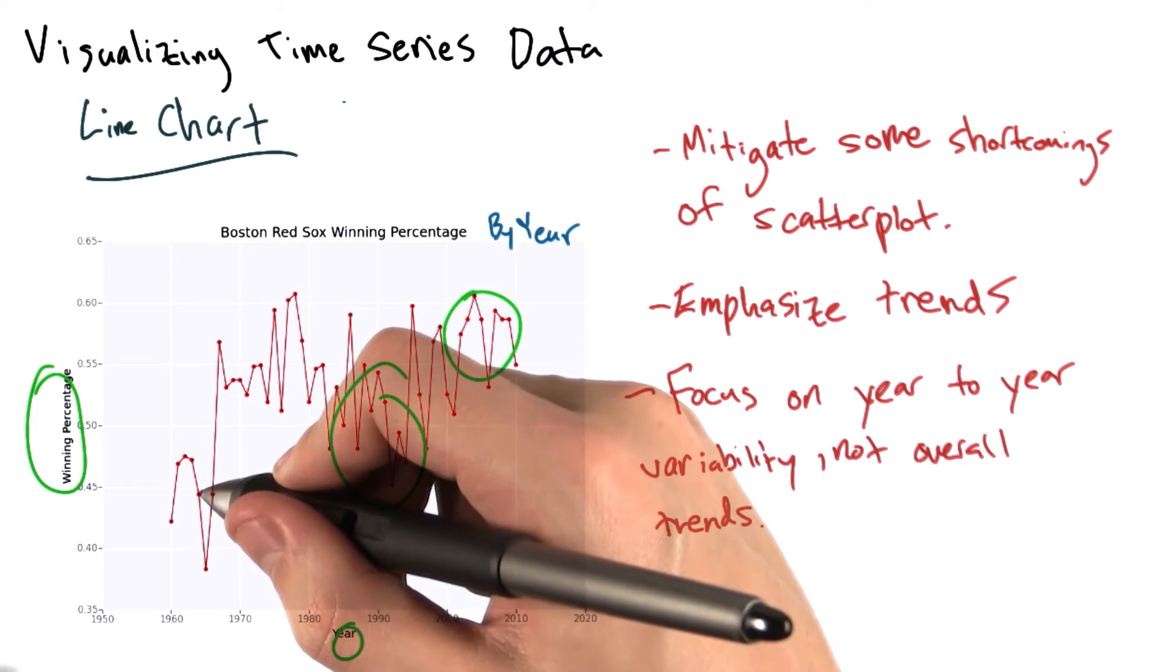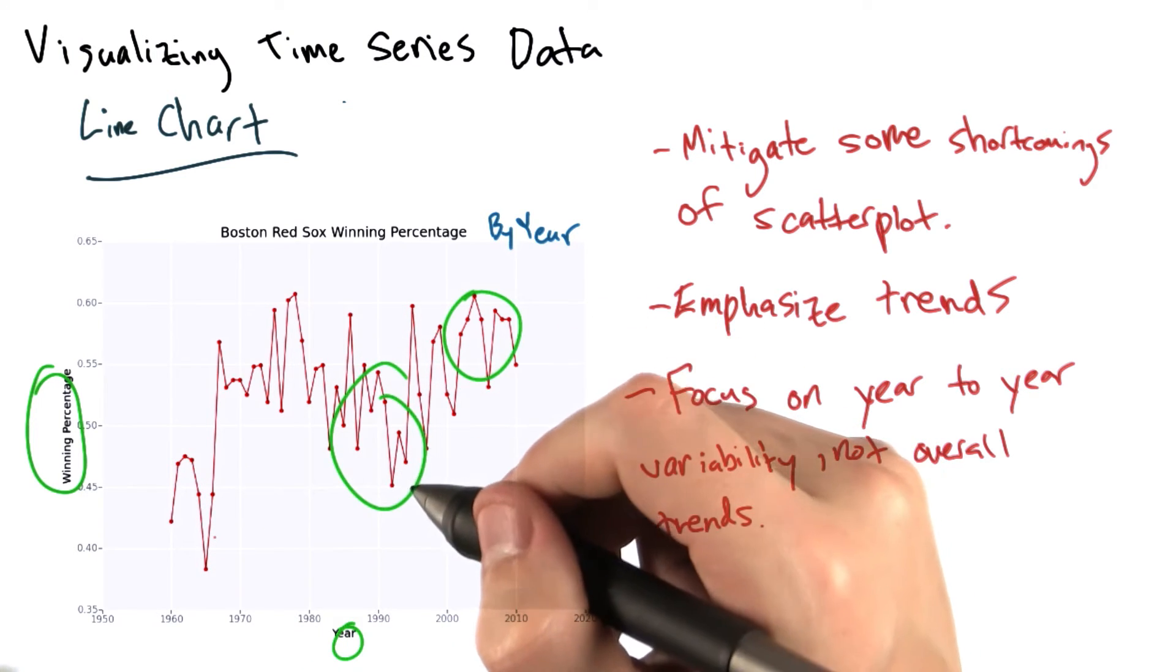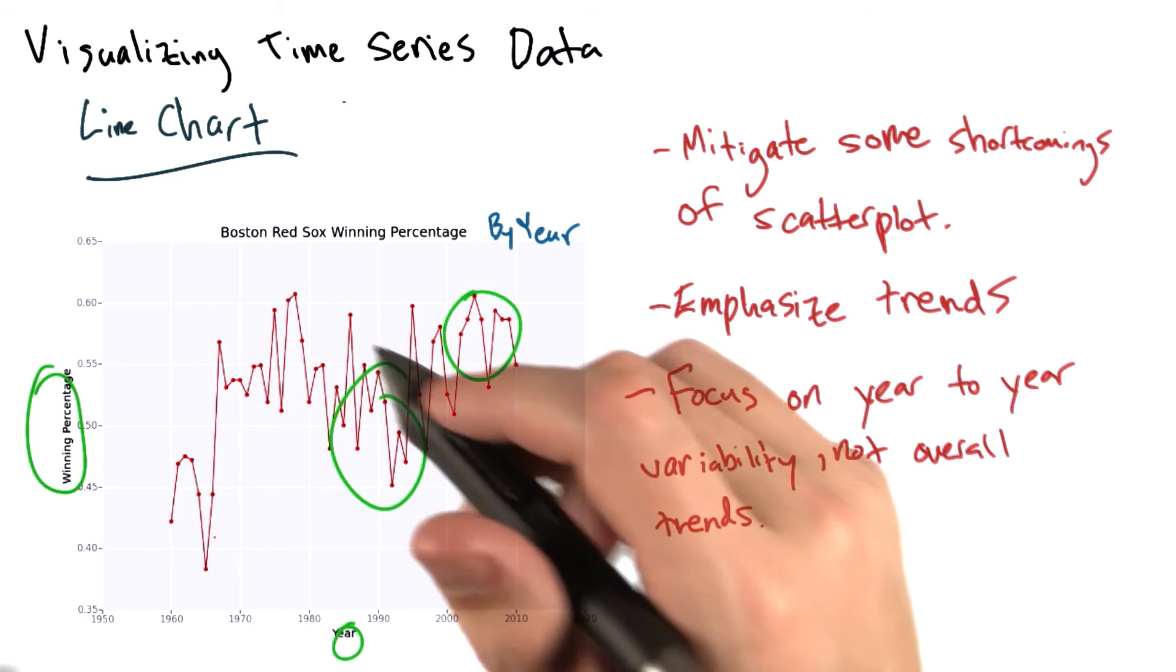We can see, for example, that from 1964 to 1965 there is a huge drop, but it's a little bit harder to have a good sense of the more global trends.